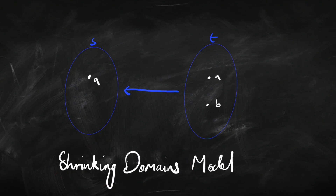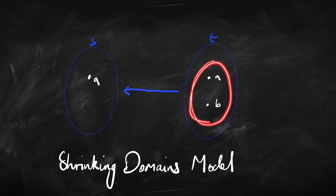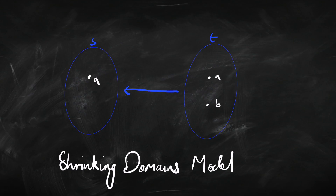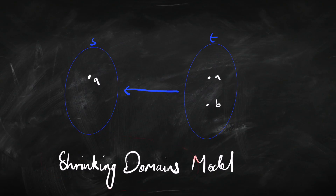We can do it going the other way around as well — we call that a shrinking domains model. When we've got an arrow from here to here, we want everything here to be over here. In a shrinking domains model, we might take some stuff and lose it when we go to an accessible world. There can be things in the source world that might not appear in the accessible world, but we don't gain anything new. We can't have something that crops up in the accessible world that wasn't in the original world. The domains might be the same, but we might lose some things — we can't gain anything. So, shrinking probably isn't quite the right word; what we really mean is not growing, not gaining anything, but potentially losing something.